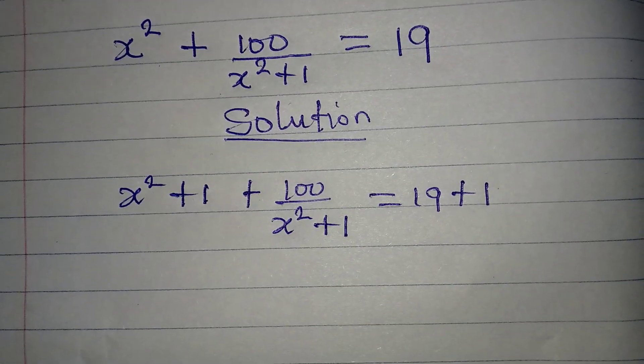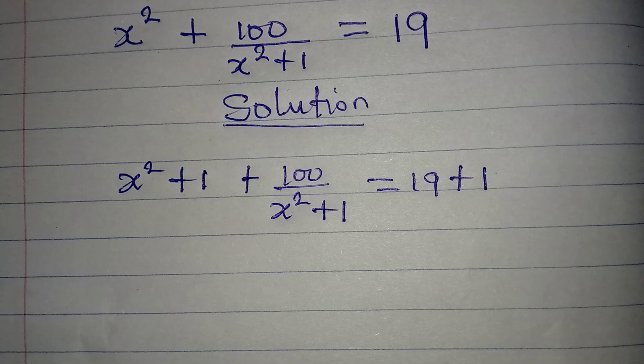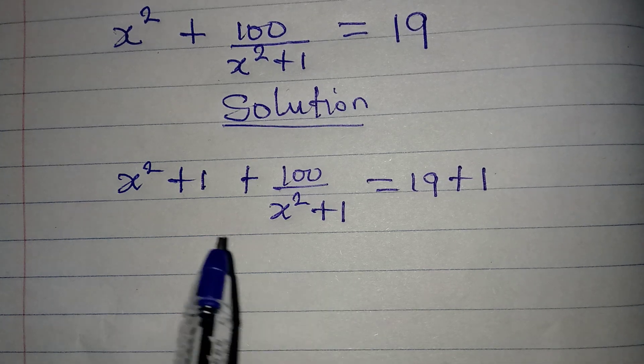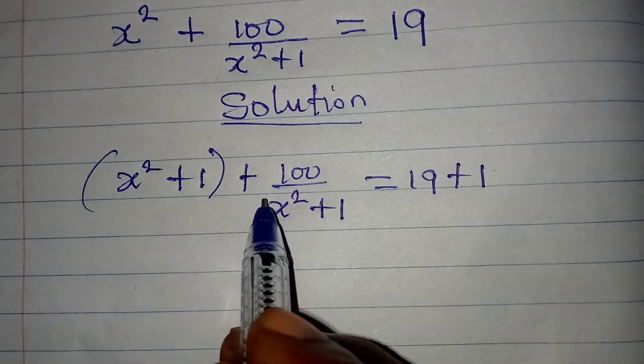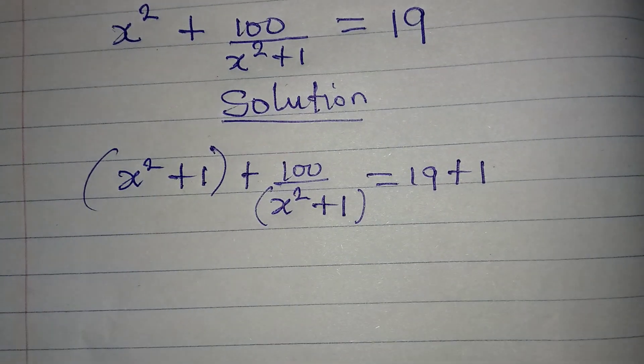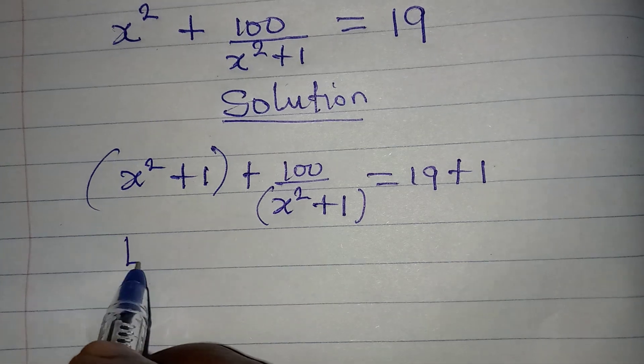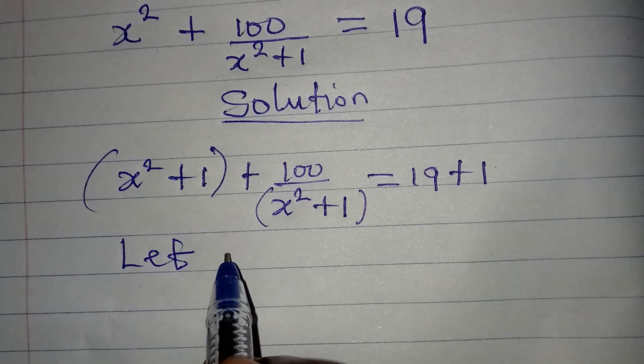Now the next thing we'll do is replace x squared plus 1. You can even have this in brackets so that anywhere you see x squared plus 1, you will use y for it. So let y be equal to x squared plus 1.